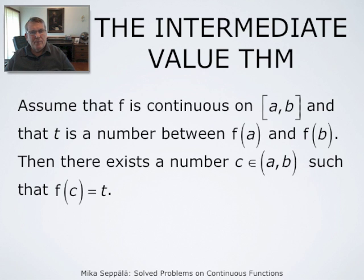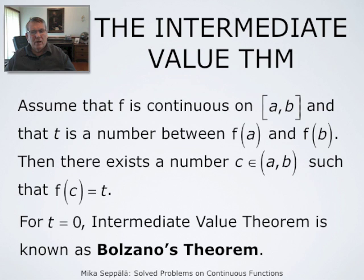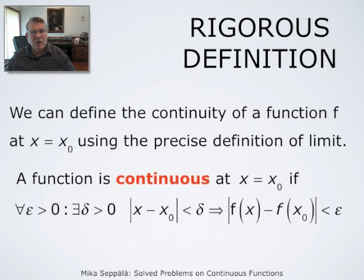The intermediate value theorem says that if f is continuous on an interval from a to b and t is a number between f(a) and f(b), then there is a number c between a and b such that f(c) equals t. This is a deep result with important consequences. For t equals 0, this intermediate value theorem is also known as Bolzano's theorem.